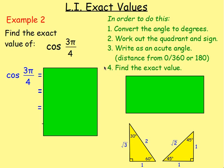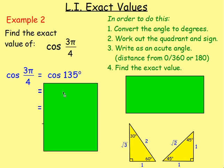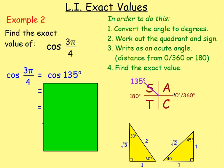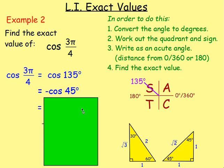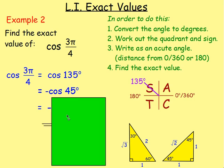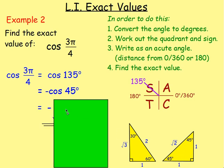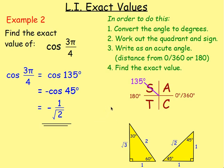Find the exact value of cos(3π/4). First, convert to degrees: multiply by 180 and divide by π — that's 3 × 180 ÷ 4, giving 135 degrees. Using the CAST diagram, 135 is in the second quadrant — that's S — and cos is negative in S, so it's negative cos. The acute angle is 45 degrees away from 180, so it's negative cos 45. Using the triangle, cos of 45 is adjacent over hypotenuse: 1 over root 2. Answer: negative 1 over root 2.